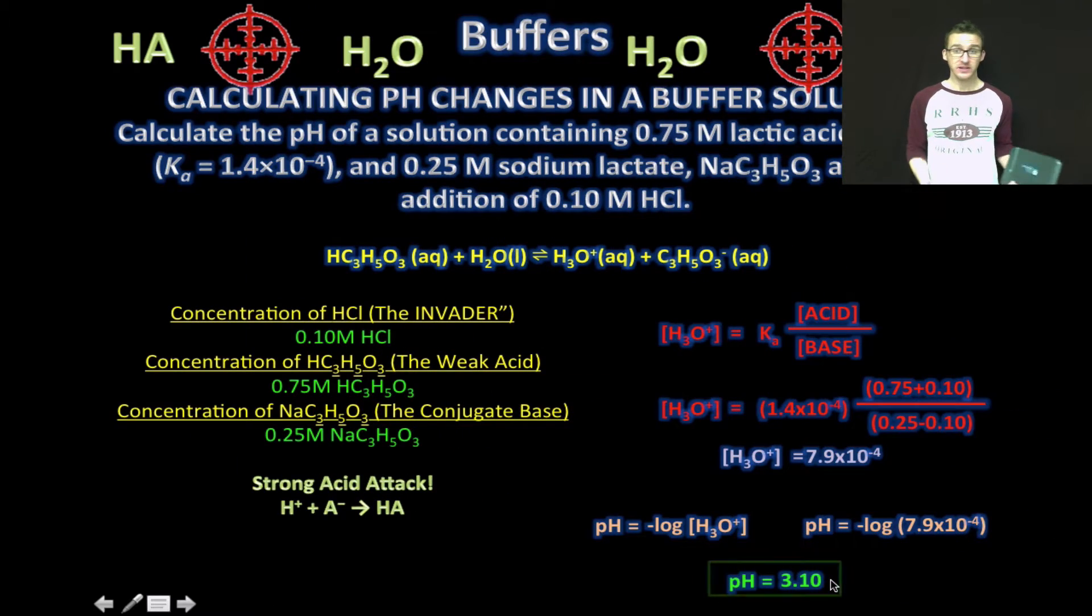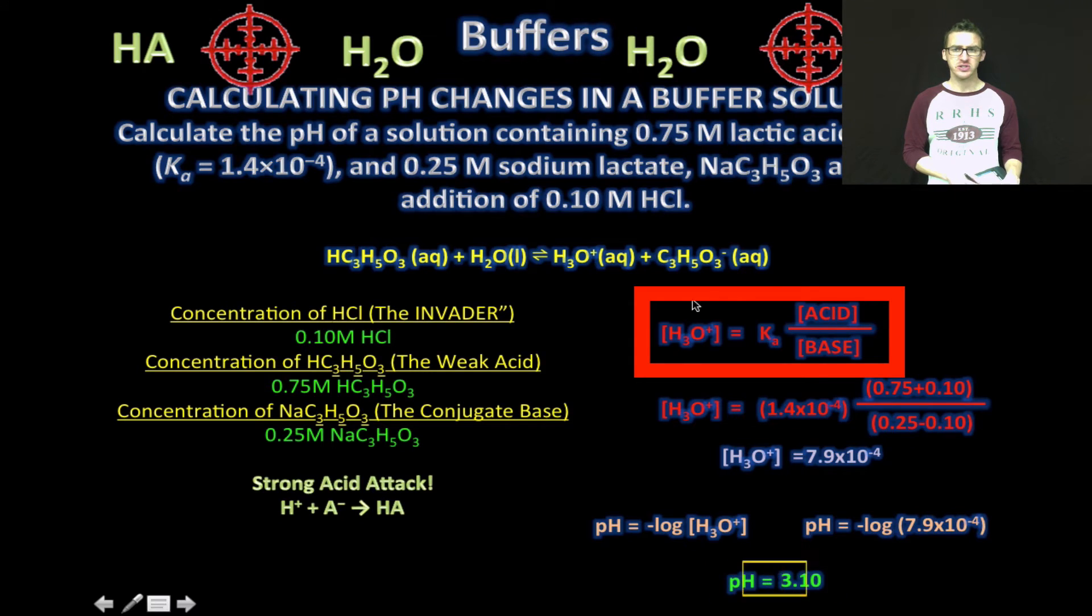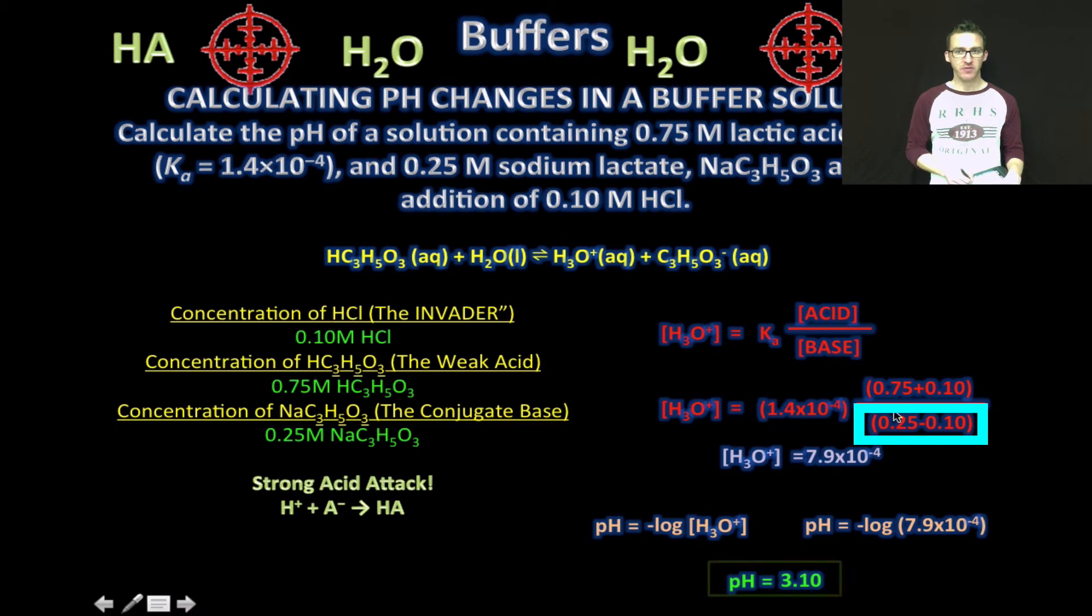So finally, before we finish, simply again recognize that when you're doing pH changes in a buffer system, you need to think about which component of your buffer is going to sacrifice its life. Then just use this equation, whichever one is sacrificing its life, you're going to subtract from. And when it sacrifices itself, it makes more of the other buffer component. So you'll add that to the other component. We are done.